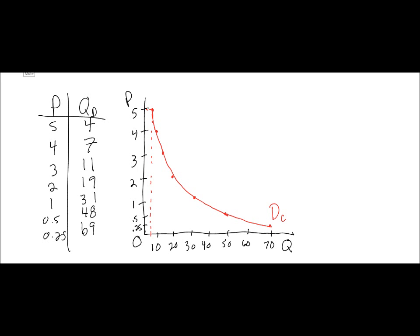We should see, of course, that the same inverse relationship we observed in our demand schedule is observable in our demand curve. You can notice that at higher prices, the quantity demanded is very low, but as the price falls, the quantity demanded for candy bars increases. Hence, we can see that there is an inverse relationship between price and quantity demanded.